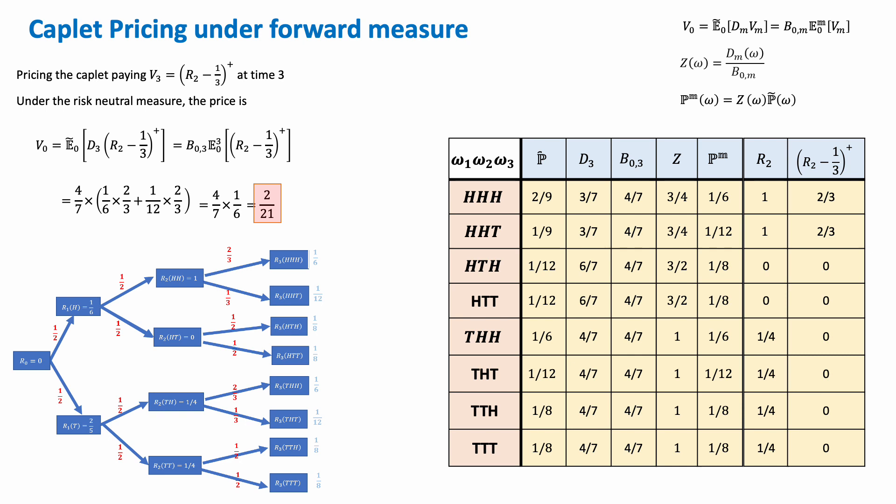So we find the exact same number as in the previous slide for the caplet. In the previous slide, that's what we were using, the risk-neutral pricing. And now here we did it by using forward rate pricing. Pricing under the forward measure. And that's pretty much basically the end of this example. Hopefully that makes sense. Thank you.